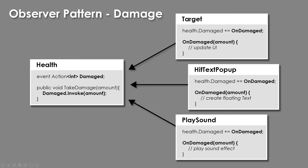In the case of the target, it's going to update its health slider HUD. The hit text pop-up will show damage numbers. The play sound script will play a sound effect when this thing takes damage. It's important to note that each of these level objects don't know anything about each other — this is a one-way dependency. The target knows about the health because it hooks into the event, but it doesn't know about the hit text pop-up. These isolated classes only create the dependency they need, which avoids spaghetti code.